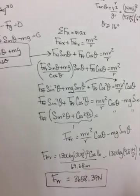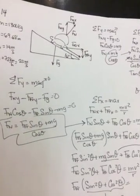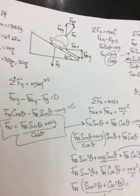And hopefully you get something like 3,658.39 newtons. All right, so hopefully your bank curves with friction are making you happy.